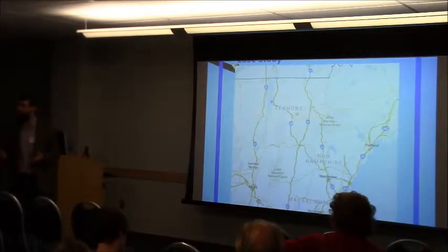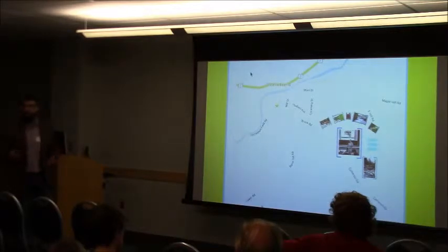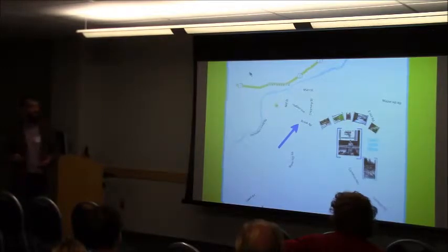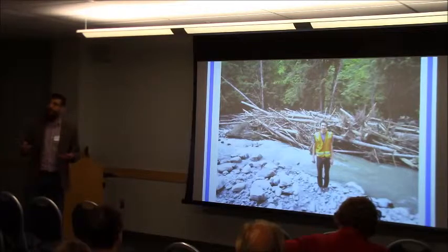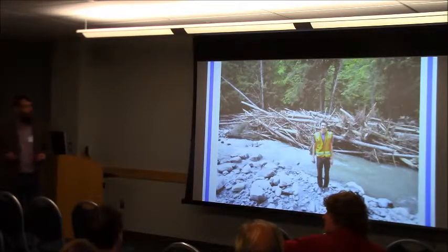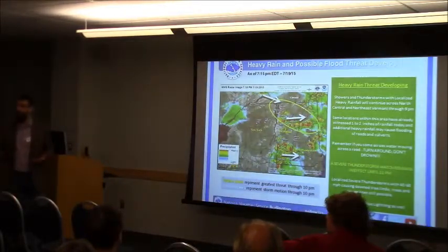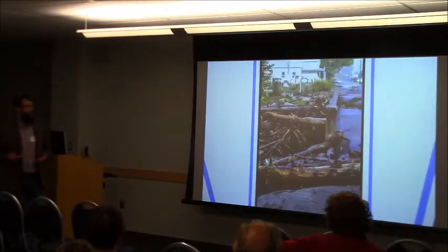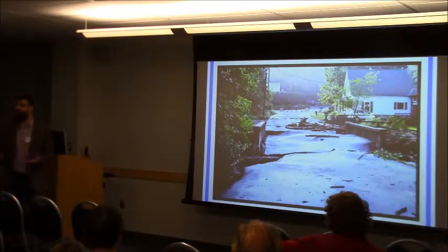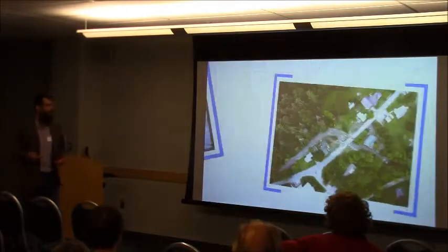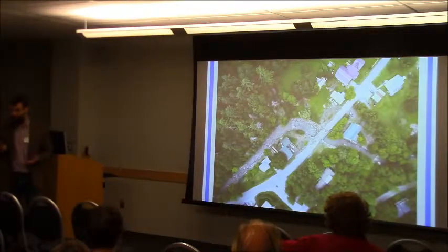Let me take you through a case study in Plainfield, Vermont. The town has a bridge over Brook Road across the Great Brook that has issues. There's a lot of woody debris in the stream, and during big storms that woody debris moves downstream, clogs the bridge, and water finds a way around the clog causing tremendous damage — sometimes in the five figures, sometimes six figures. With UAS we can go out and map the damage.